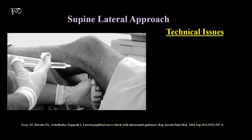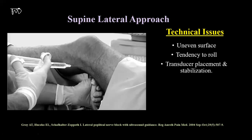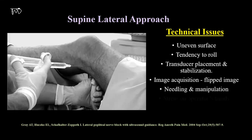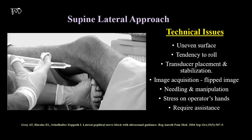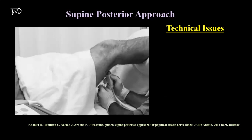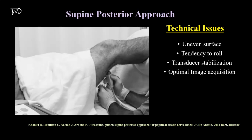In the supine lateral approach, the transducer is placed posteriorly over the popliteal fossa and the needle is inserted from lateral to medial side. Additional assistance is required for positioning. The flexion at the knee introduces an uneven surface and elevation might cause rolling of the leg. Hence, transducer stabilization, optimal image acquisition, and needle manipulation may be difficult sometimes. The operator's hand also gets tired in this position, which ultimately affects performance. In the supine posterior approach, patient position and probe placement are the same as the supine lateral approach, with the needle inserted out-of-plane from posterior to anterior. Similar technical issues may arise.